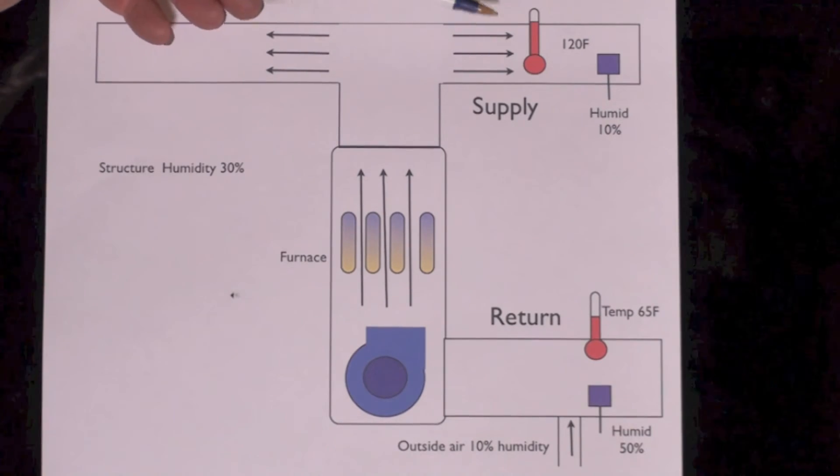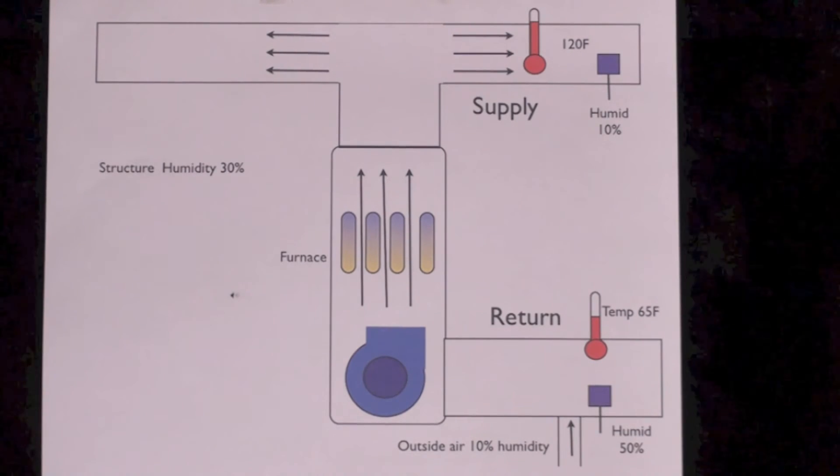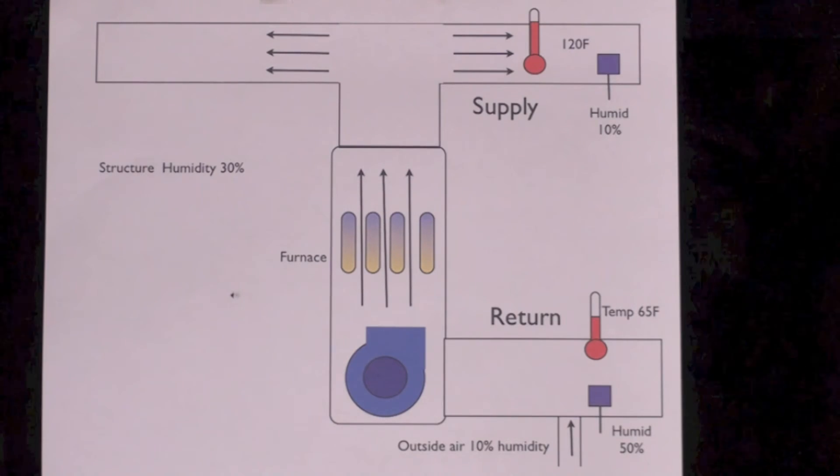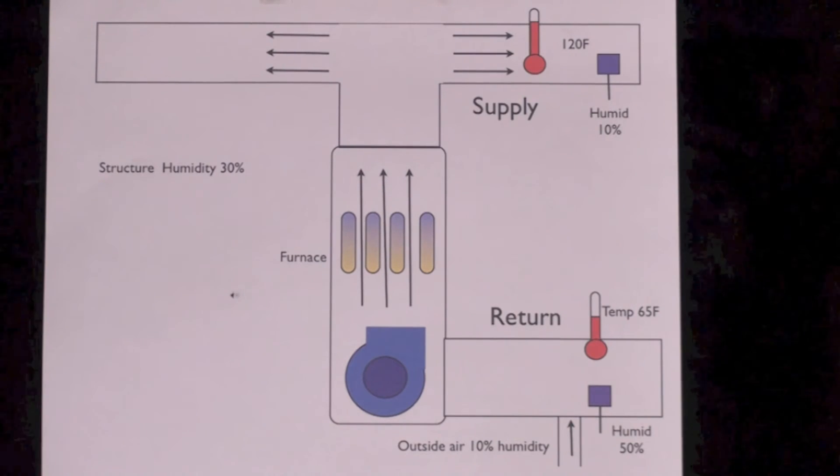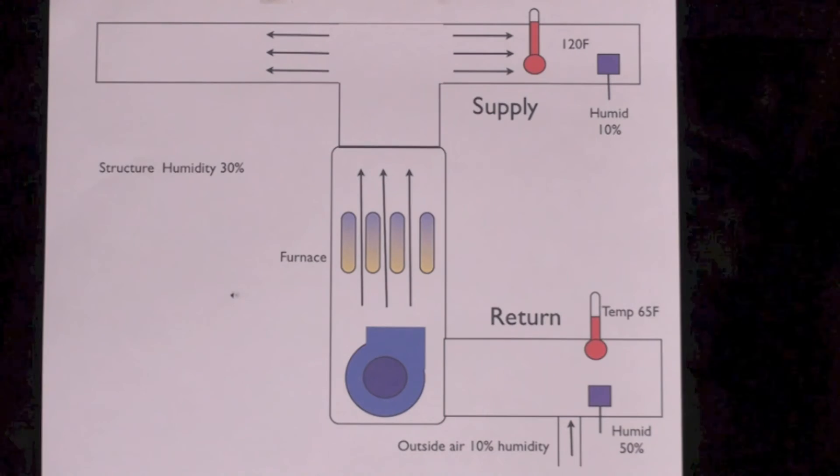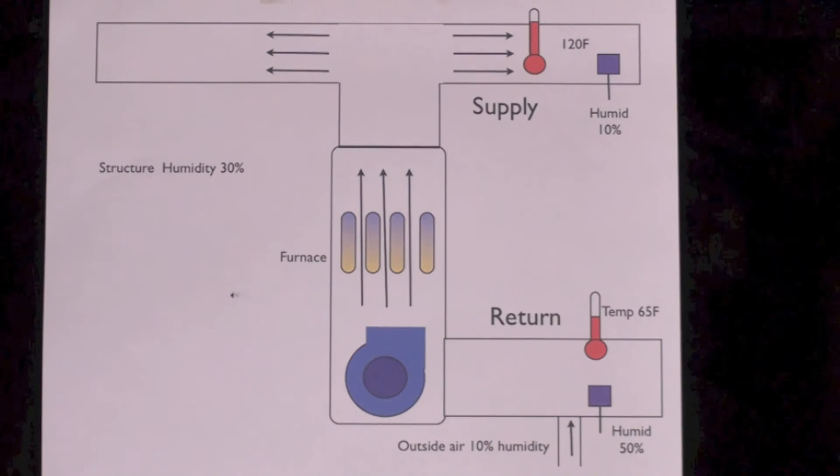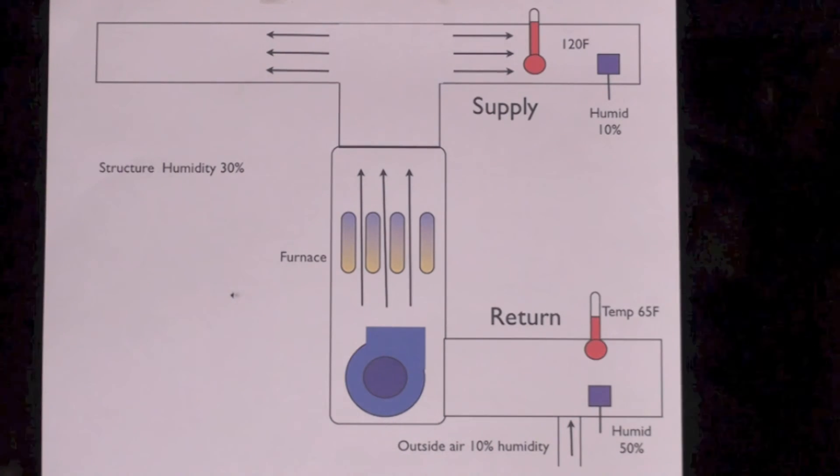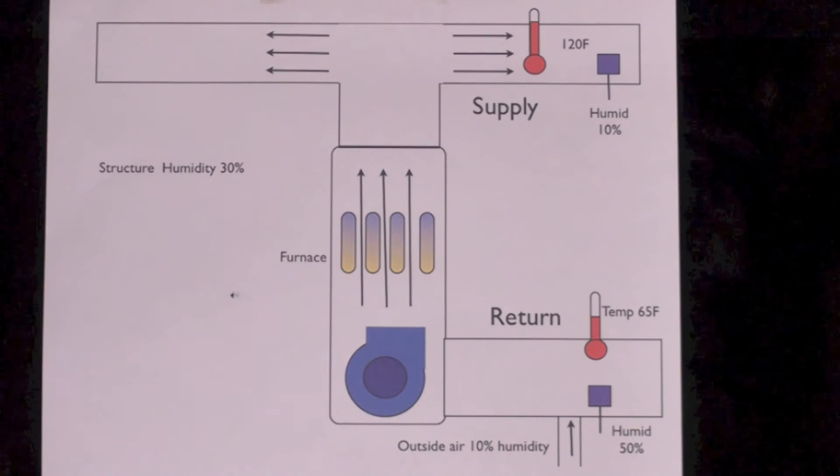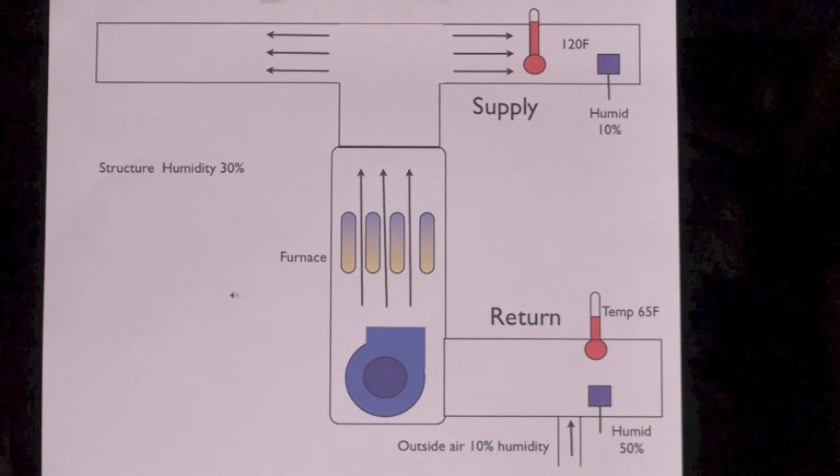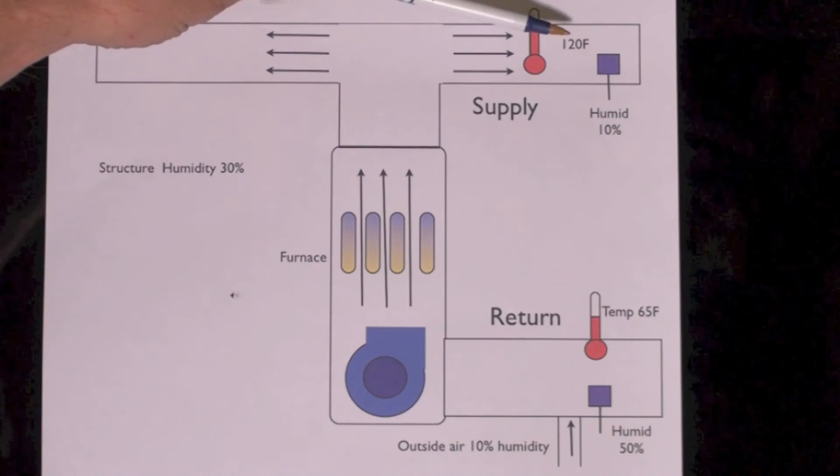If I raise the temperature, the relative humidity goes down unless I add humidity in or take it out. In this case, I'm not adding or subtracting any humidity. So we end up with low humidity coming out the ducts.